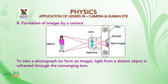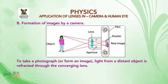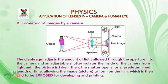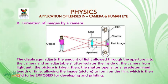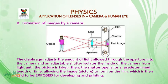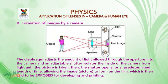Formation of images by a camera. To take a photograph or form an image, light from a distant object is reflected through the converging lens. The diaphragm adjusts the amount of light allowed through the aperture into the camera, and an adjustable shutter isolates the inside of the camera from light until the picture is taken. Then the shutter opens for a predetermined length of time allowing the image or picture to form on the film, which is then said to be exposed for developing and printing.